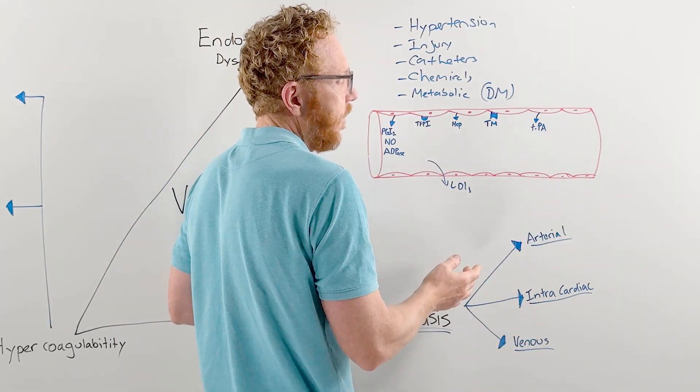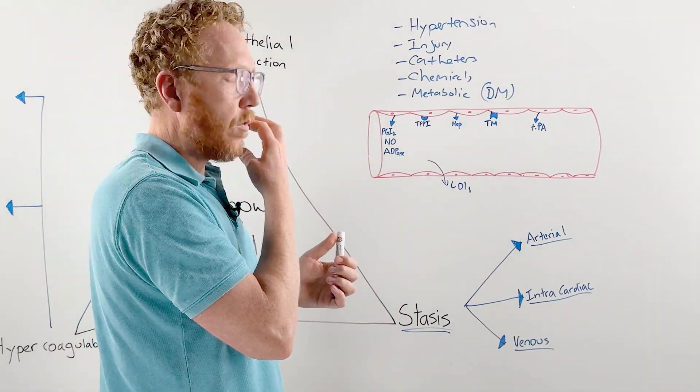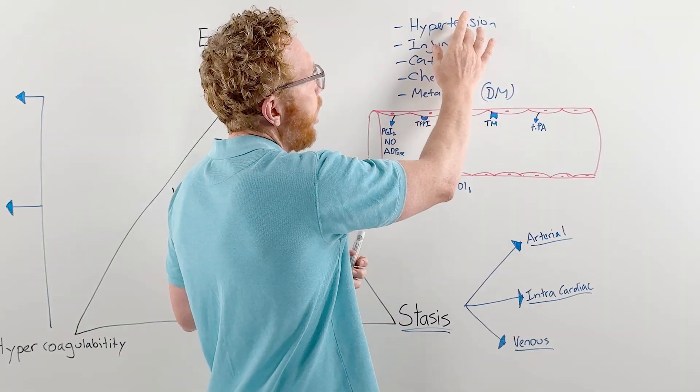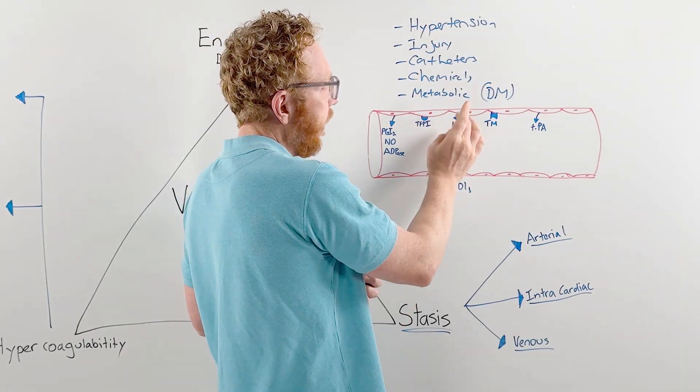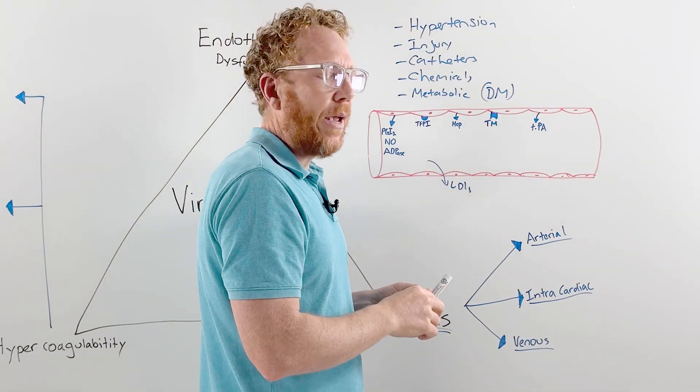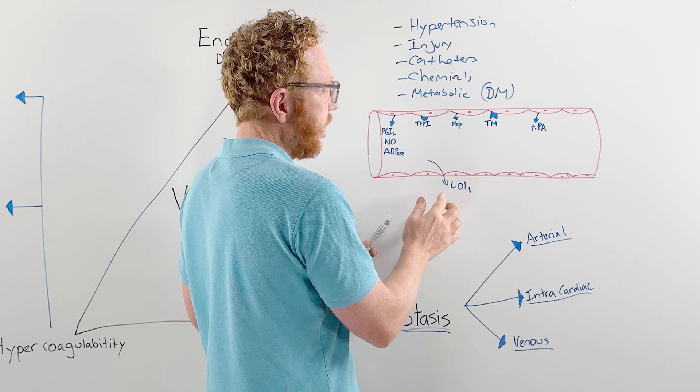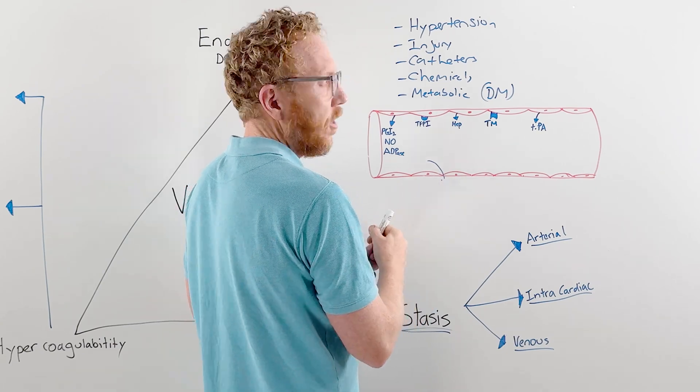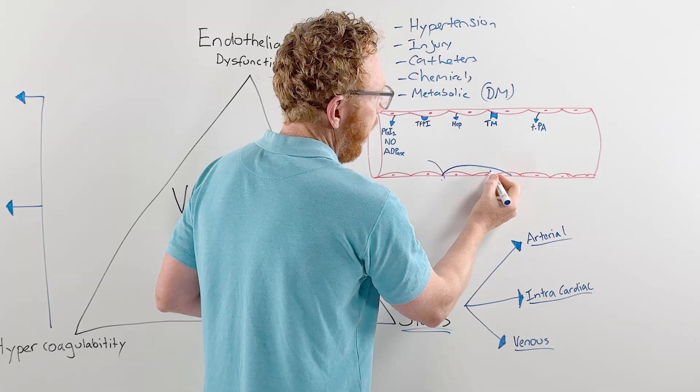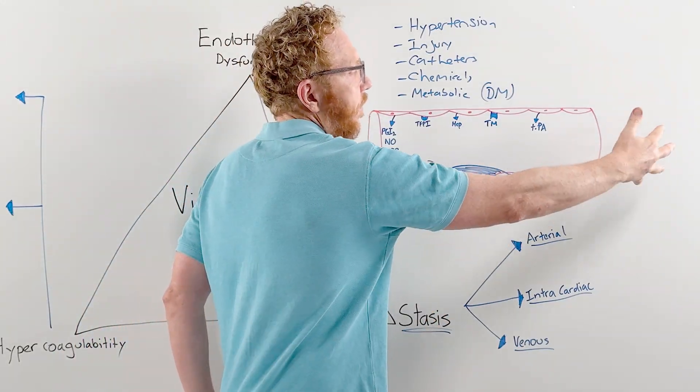In arterial stasis, let's say in the coronary vessels—the vessels of the heart—we know that hypertension, high LDL cholesterol, and diabetes increase the likelihood of endothelial dysfunction. What starts to happen is we get a condition known as atherosclerosis, which puts a plaque in the blood vessel.